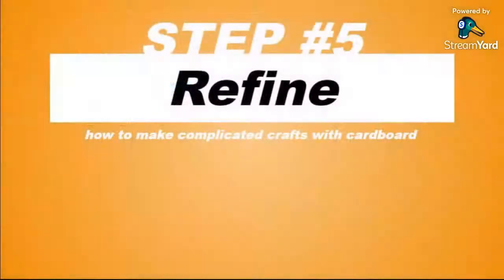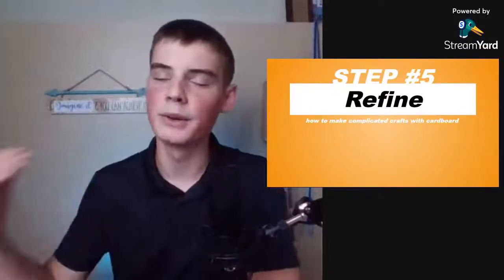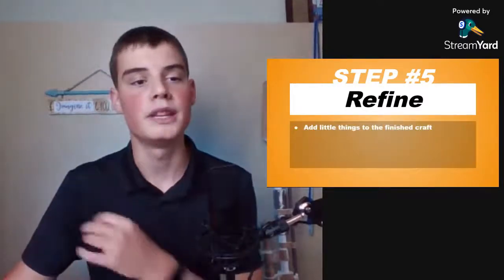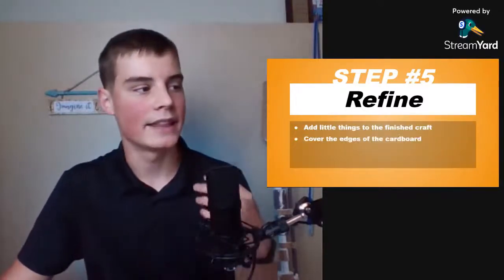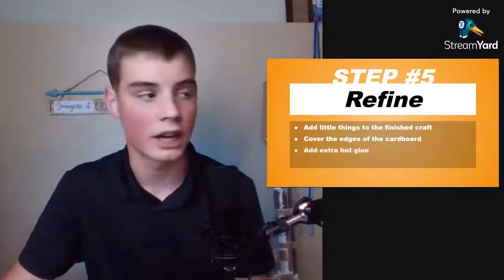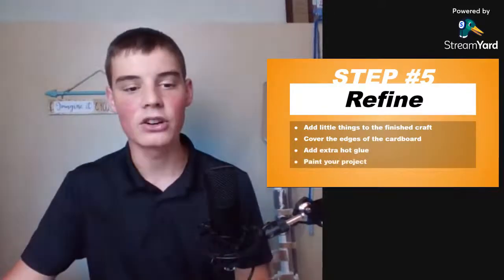But step number five is to refine your model. And refining can be a really fun step for some people and other people like to skip it, but this is where you're just adding little things to the end of your project. And that could be covering the edges of the cardboard or you could be adding extra hot glue or painting it, and all of those are different ways to refine the model. But pretty much no matter what you do I recommend refining it in a little bit of a way, whether you're just adding a little extra reinforcing hot glue to things that you tacked on earlier, or covering up the edges of the cardboard. That's a really big one to make it look professional.